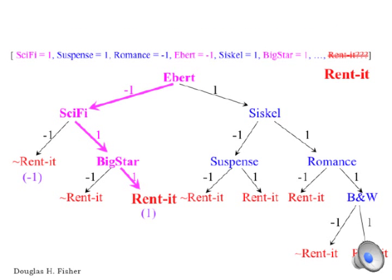In this particular case, Ebert does not recommend the movie, so we would take the left branch of the Ebert node. It is a sci-fi movie, so we'd take the right branch there. And it does include a big star, so we'd take the right branch there, and we would reach a decision to rent it.